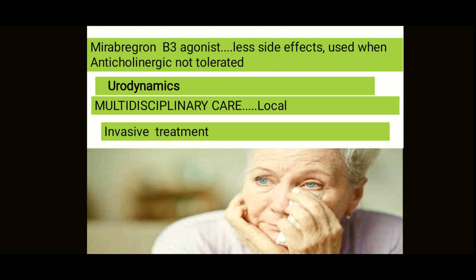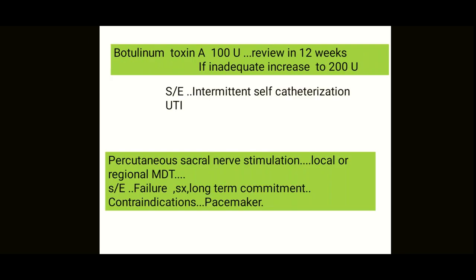Botulinum toxin acts presynaptically by cleaving SNAP-25, decreasing release of excitatory neurotransmitters and axonal expression of proteins, and also affecting the sensory afferent pathway. The toxin generally persists for around 3 to 6 months. Treatment is started at 100 units because higher doses increase the risk of urinary retention. If the patient returns within 6 months with recurrent incontinence, the dose should be increased to 200 units.